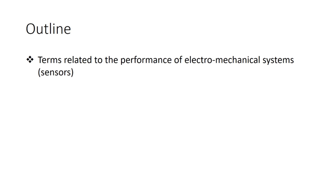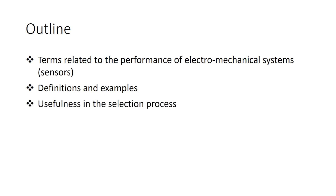The outline of this lecture is as follows. We will be studying the terms related to performance. We will learn the definitions and look at various examples related to these terms. At the end we will discuss the usefulness of all these terms in the selection of the variety of electromechanical systems.